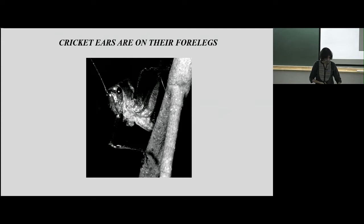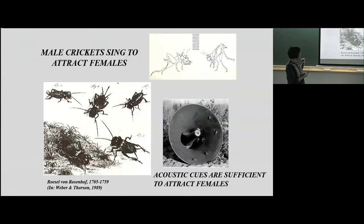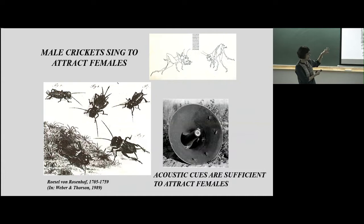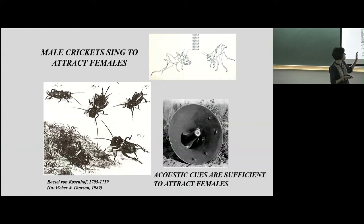What are cricket sounds for? Only adult male crickets sing, and they sing to attract females of their species. As we've known for a very long time — this is a painting from the early 1700s showing a male cricket singing at the mouth of his burrow with a female approaching. You can make a sound recording of a cricket song, play it out in the field, and attract females of the same species. So these songs are sufficient for attracting females.